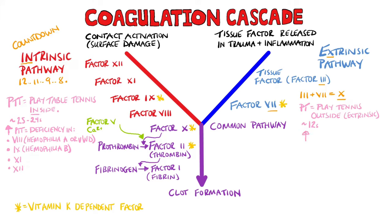A prolonged PT with a normal PTT can come from factor 7 deficiency. It may also be a sign of incoming disseminated intravascular coagulation, or an early sign of vitamin K antagonism, since factor 7 has the shortest half-life. This means that in the early stages, the remaining vitamin K dependent factors — 2, 9, and 10 — are not affected as much.